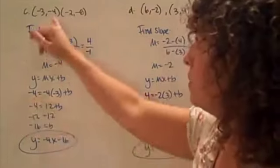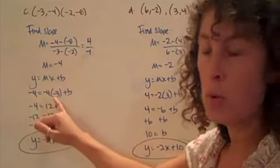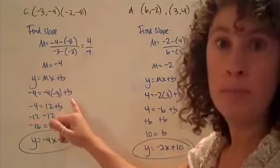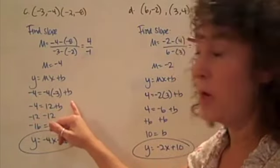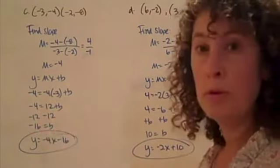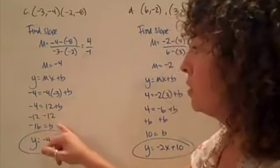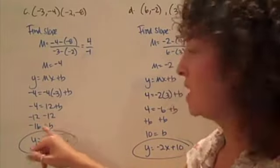So if I plug in my negative 4 for my slope, my x-coordinate, and my variable I'm going to keep for my y-intercept, I'm going to do my algebra through here. And once I work through, I end up with my y-intercept as negative 16.